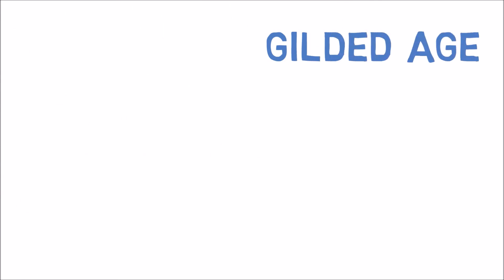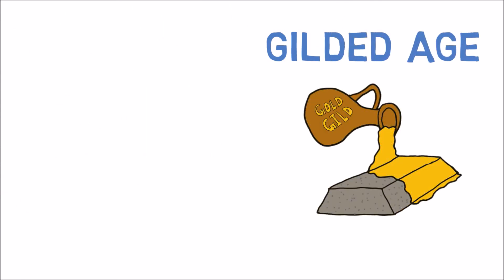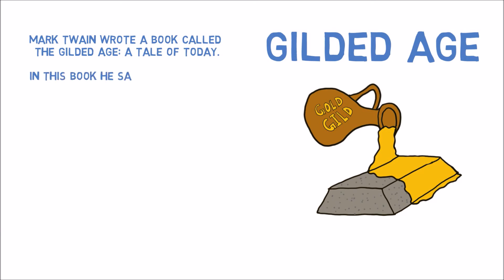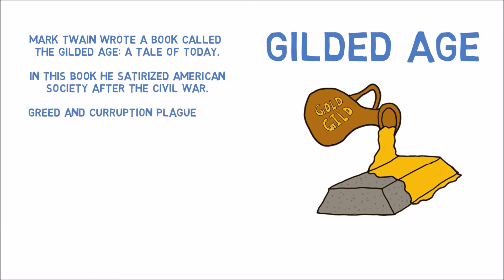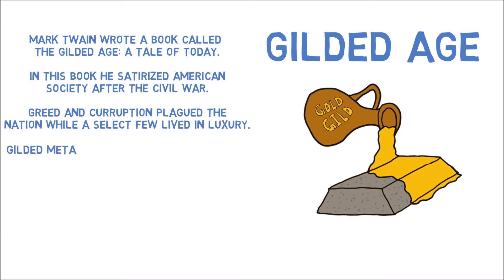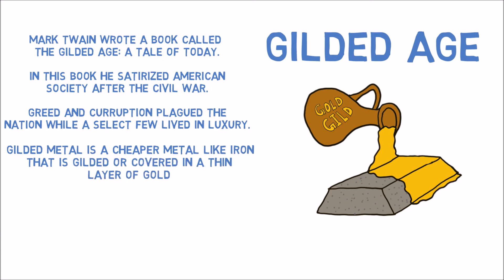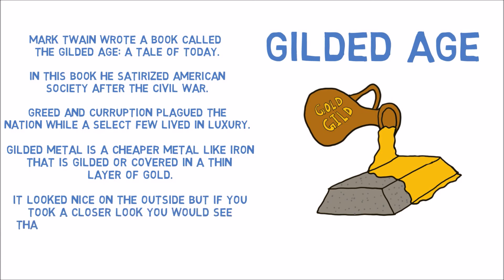The Gilded Age. Mark Twain wrote a book called The Gilded Age: A Tale of Today, in which he satirized American society after the Civil War. Greed and corruption plagued the nation while a select few lived in luxury. Gilded metal is a cheaper metal like iron that is covered in a thin layer of gold — it looked nice on the outside, but appearances aren't always what they seem to be.